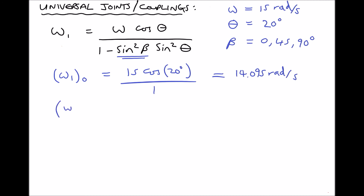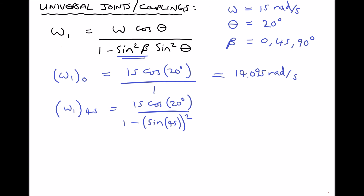For the second calculation, omega 1 at beta = 45 degrees: we have 15 cos(20°) divided by 1 minus sin²(45°) × sin²(20°). Note that sin²(beta) is the same as sin(beta) squared, and sin²(theta) is the same as sin(theta) squared. We need to take care when entering this into the calculator. Running that through gives us 14.971 rad/s.